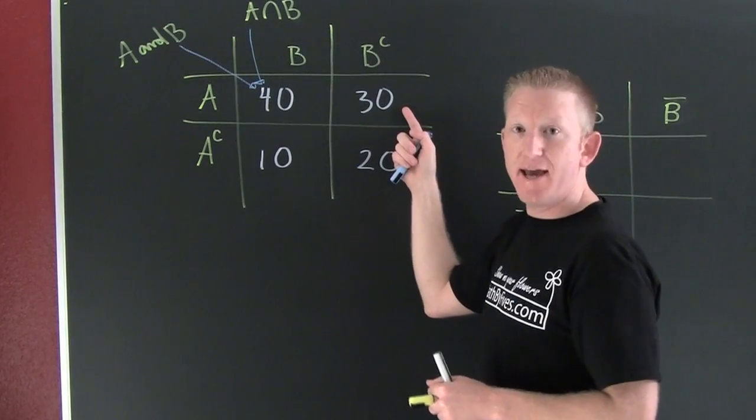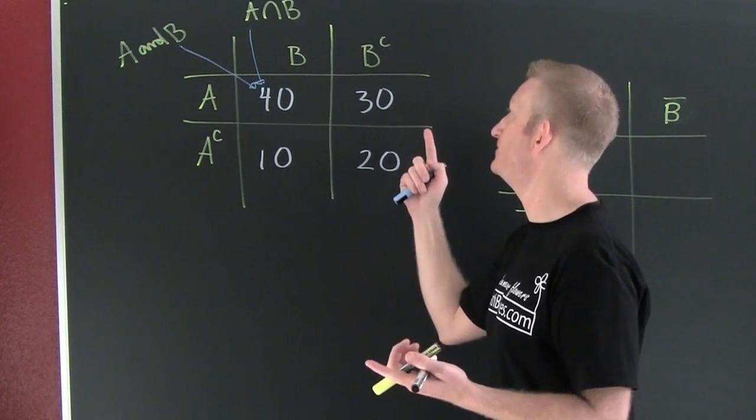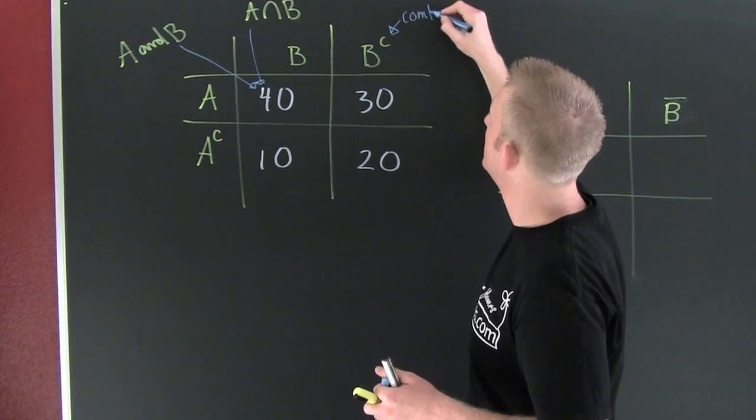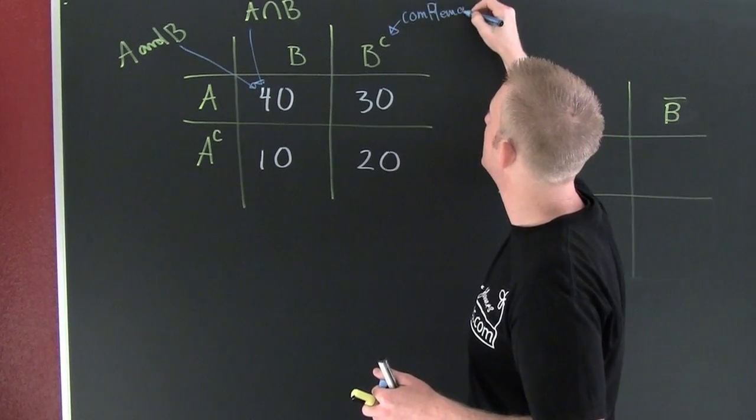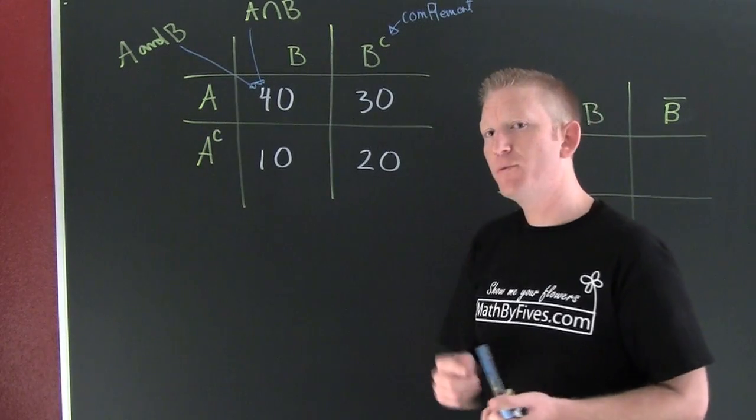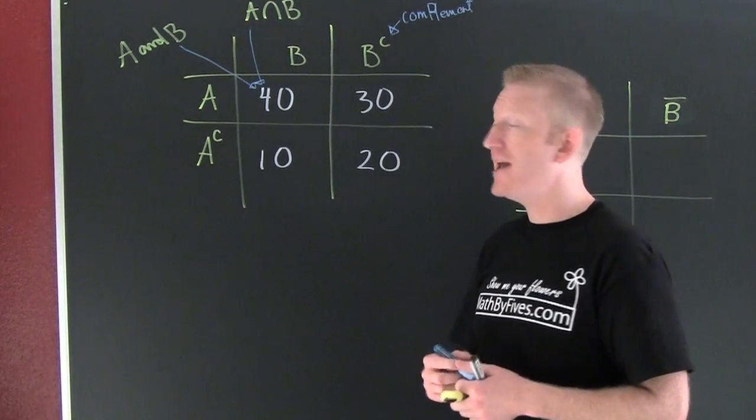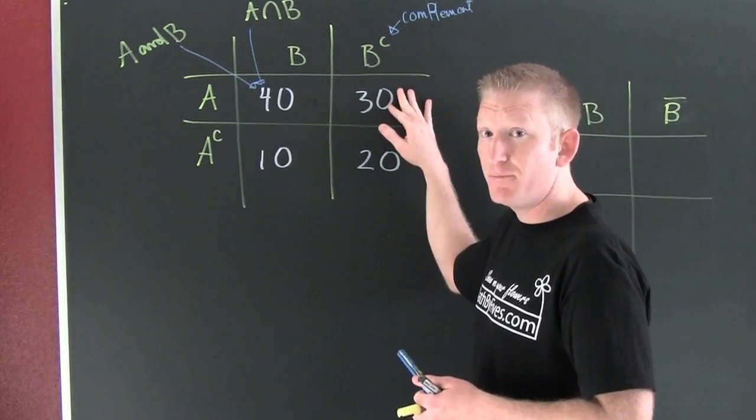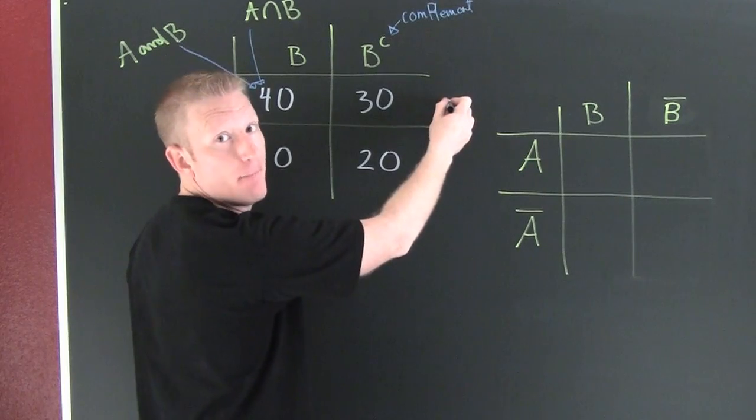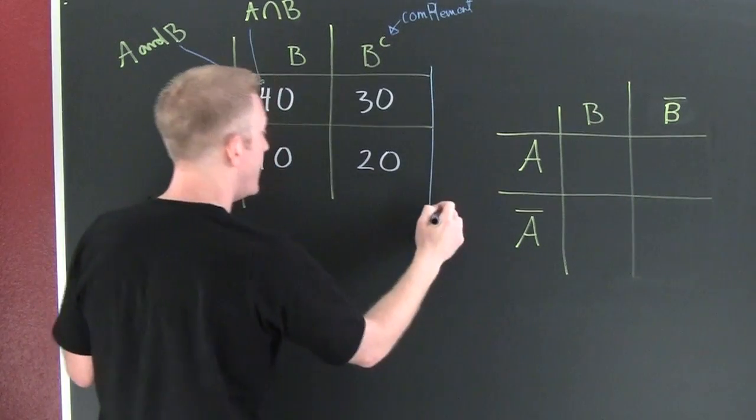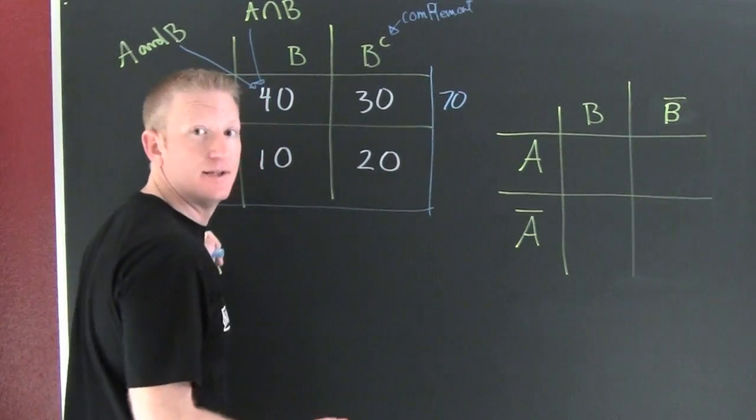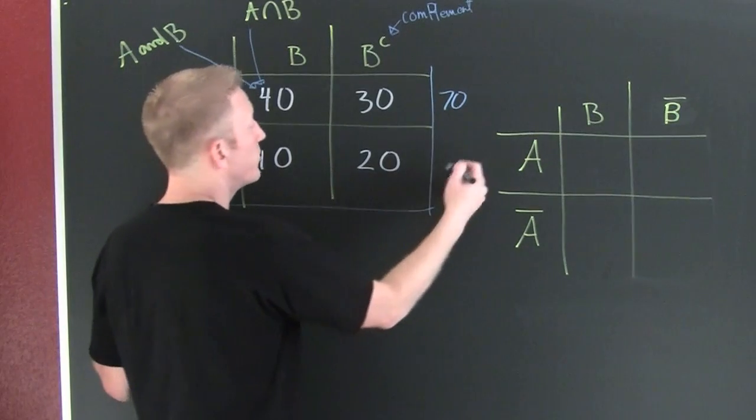Now wait a minute. Here's the stuff that happened in A and B complement. Yeah, this is B complement. This is everything that is not in B. All right, so maybe we want to find everything that is in A. Because this is the stuff in A and B, this is the stuff in A and B complement. So if we're going to find the stuff in A, that's going to be over here in its margins. So the things that occur in A are going to be in its margins. Here we have 70 things in A.